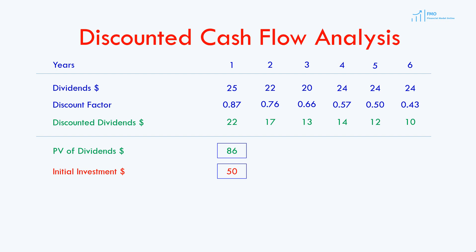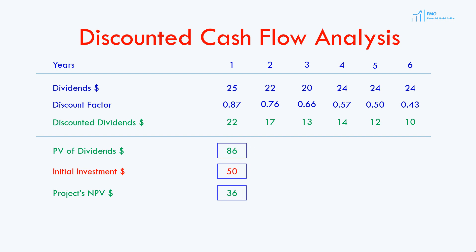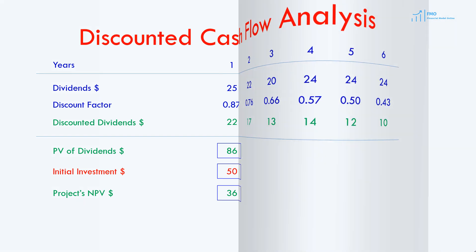Suppose the initial investment was 50. Then this simple project's net present value is the present value of dividends less the initial investment, which gives us 36. The investment is worthwhile as long as the net present value is equal to or greater than zero.